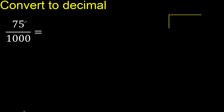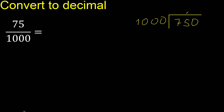75 divided by 1000. 75 is less, therefore complete — always complete with 0. Here 0.00 is less, therefore complete with 0.